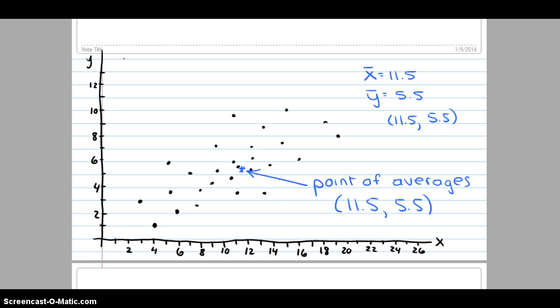Looking at this scatter plot, if I drew a nice smooth oval around this, notice that there are far fewer points out towards the left or the right or the top or the bottom. There's more concentration of points in the center.